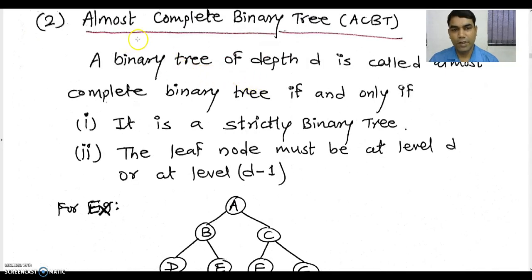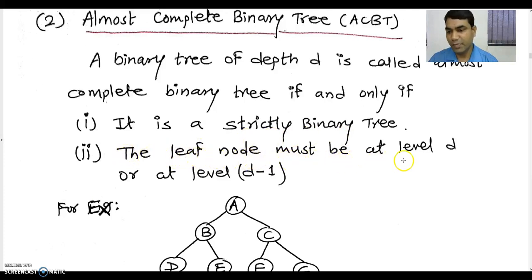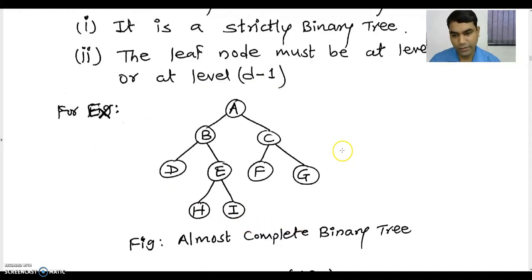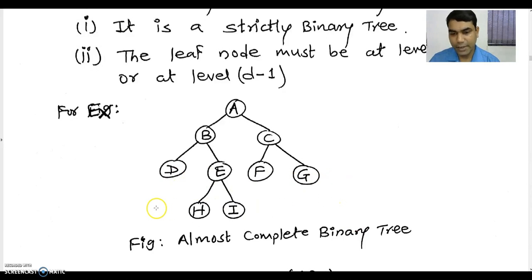The second type of binary tree is almost complete binary tree. A binary tree of depth D is called an almost complete binary tree if and only if it satisfies the following conditions: it must be a strictly binary tree, and a leaf node must be placed at level D or at level D-1. That means the leaves must be at the last level or second last level. If such a condition is satisfied, the tree is called an almost complete binary tree.